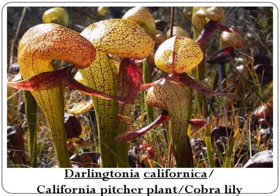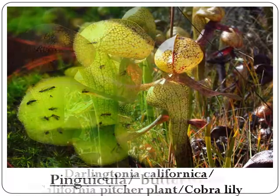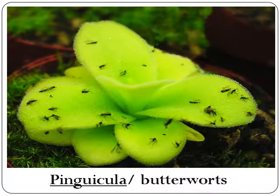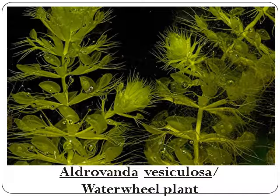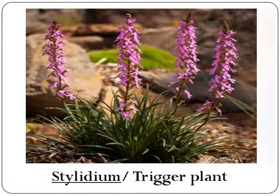Darlingtonia californica, the California pitcher plant or cobra lily. Pinguicula, or butterwort. Aldrovanda vesiculosa, the water wheel plant. Stylidium, or the trigger plant.